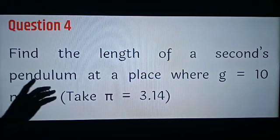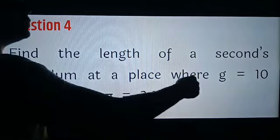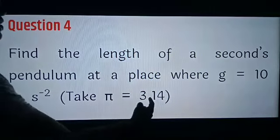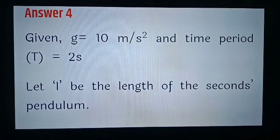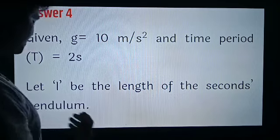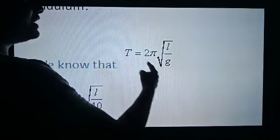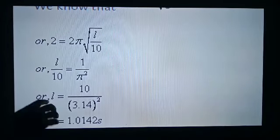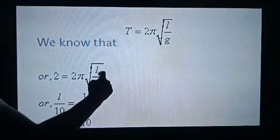Fourth question: find the length of the second pendulum. Since it is a second pendulum, the time period T is equal to 2 seconds, at a place where g is equal to 10 metres per second squared. Take pi equal to 3.14. G is given as 10 m/s² and the time period is 2 seconds. Let L be the length. From the formula T equals 2π√(L/G), we substitute: 2 equals 2π√(L/10).